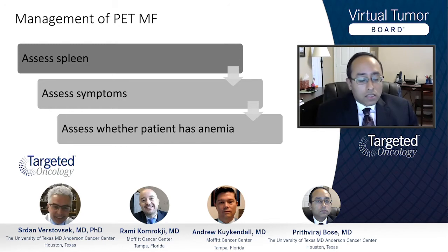AML, of course, is a whole different matter. When the blasts are increasing, you're getting into accelerated phase. Even before the formal post-ET AML, you want to introduce the hypomethylating agents — those are the cornerstone right there for those patients — while perhaps continuing ruxolitinib, if indicated for spleen symptoms.